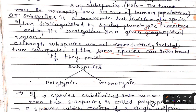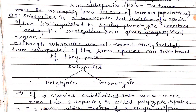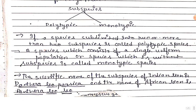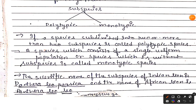After that, sub-species are categorized as polytypic and monotypic. The sub-species are divided into two types: one called polytypic species and one called monotypic species.